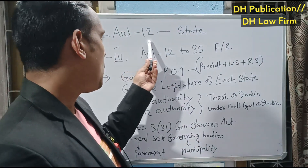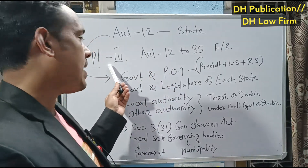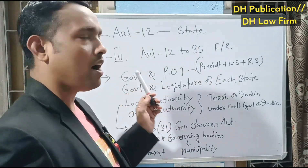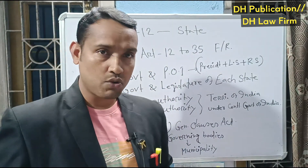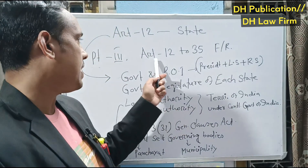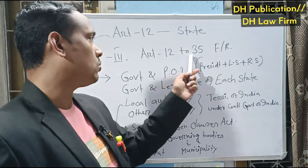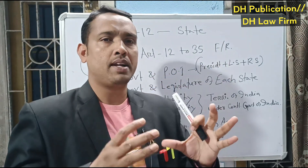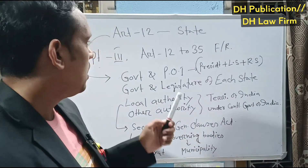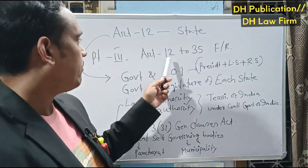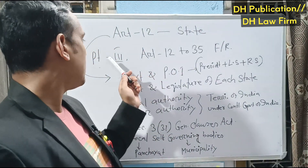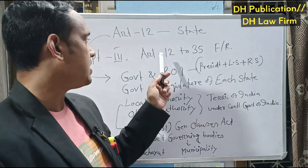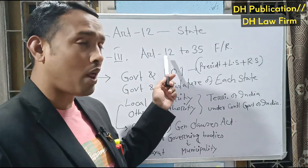Article 12, that means Part 3. Part 3 of the Indian Constitution consists of Article 12 to 35, that means fundamental rights. So Article 12 is the first article of Part 3 of the Indian Constitution.